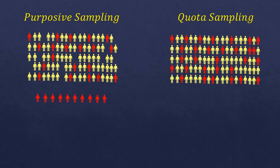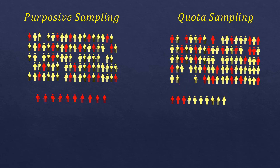Since the total sample size is 10, that means 3 must be female (30%) and 7 must be male (70%). As you can see in the visual, there are 3 females representing the 30% of females in the population, and 7 males representing the 70% of males from the whole population.